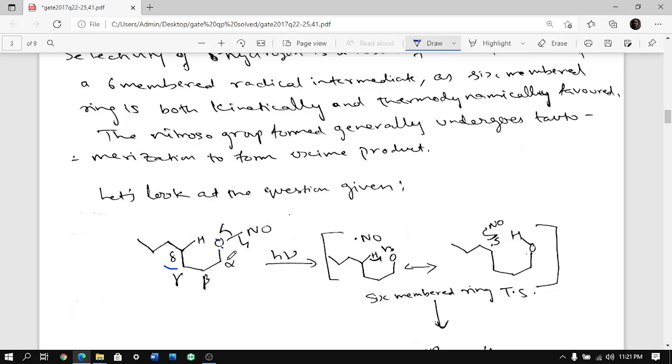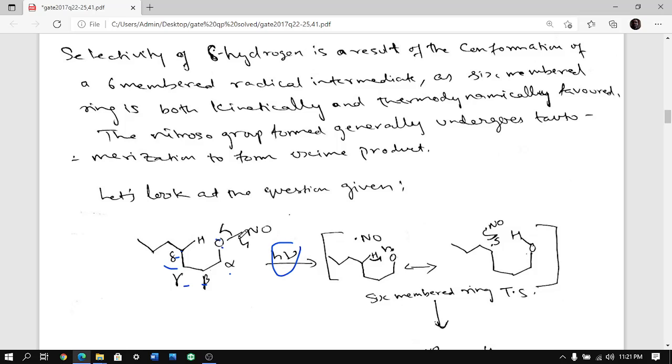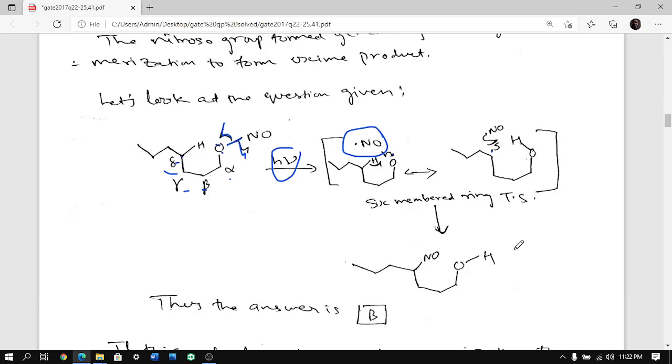So what you have to do is basically put ONO and see that oxygen will abstract a proton from that carbon so that it forms a six-membered ring. Six-membered ring is kinetically and thermodynamically both favored. So if you start counting from oxygen: alpha, beta, gamma, delta. So delta carbon gets functionalized. In photochemical condition, O-N bond is very weak, so it immediately opens up. They both cleave and you get oxygen.